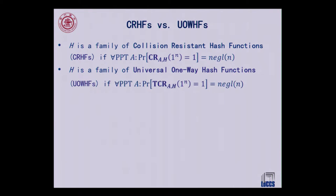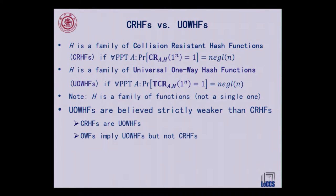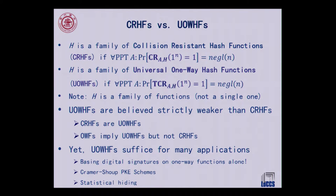We are talking about a family of one-way functions, not a single function, because otherwise we can do very trivial attacks — for example, a non-uniform attacker can simply hard-code a colliding pair for a single function. UOWHFs are strictly weaker: collision-resistant hash functions are by definition already universal hash functions, but we can construct UOWHFs from one-way functions while we know separations prevent constructing CR hash functions from OWFs. UOWHFs are useful for digital signatures, PKE, and statistical hiding schemes.